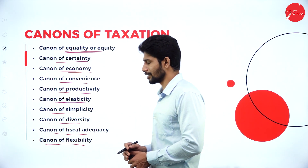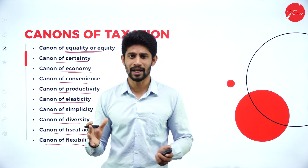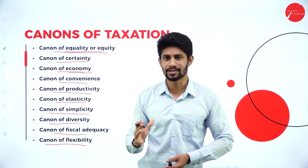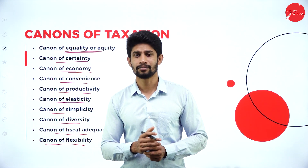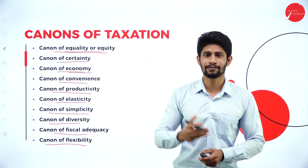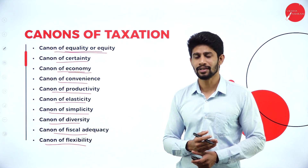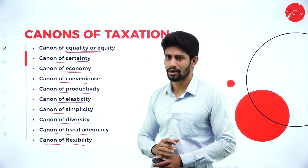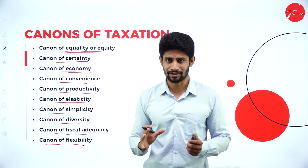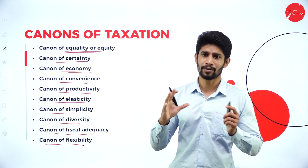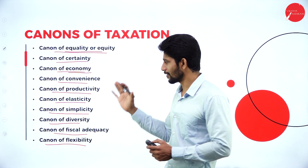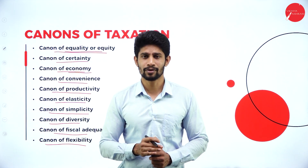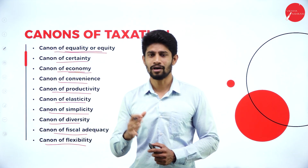Canon of flexibility — the collection of tax, paying of tax, and the rules and regulations should all be flexible for both the payer of the tax and the collector of the tax. These are all the principles or characteristics of a good tax structure, as given by Adam Smith in 1776 in his book Wealth of Nations.